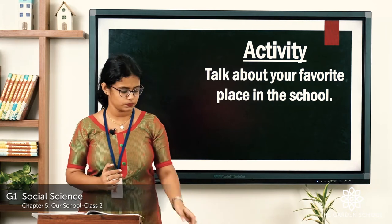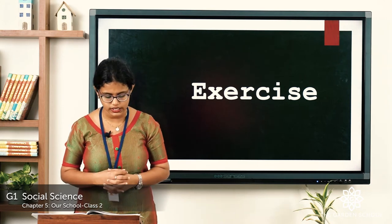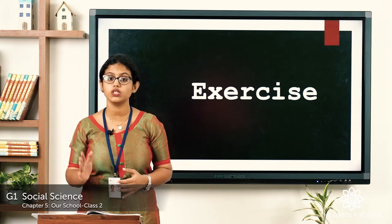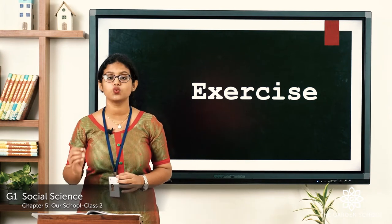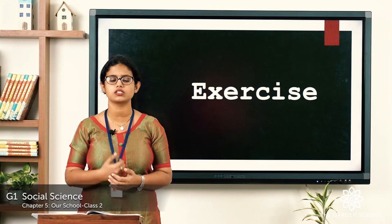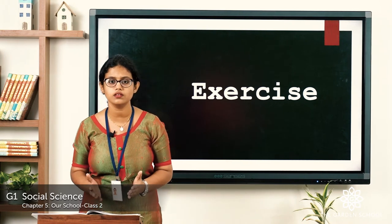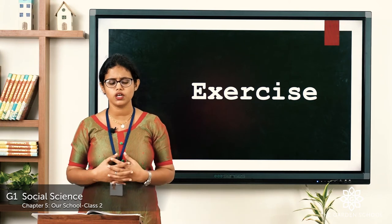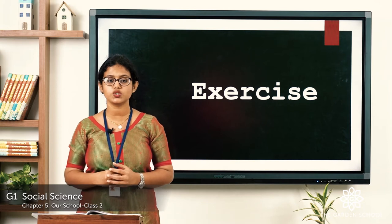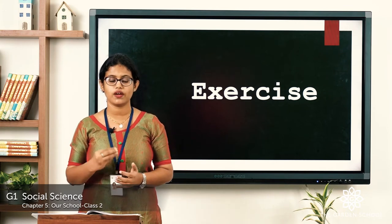Now let's move on to the exercise. Take page number 32 in your textbook. The first exercise asks you to tick things you should do in a classroom and cross what you should not do. First: use kind words to speak to one another — you should do that. Second: hit other children — that is not good, so cross it. Third: listen carefully when spoken to — tick that box.